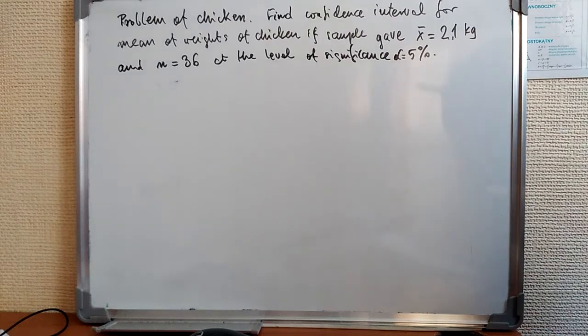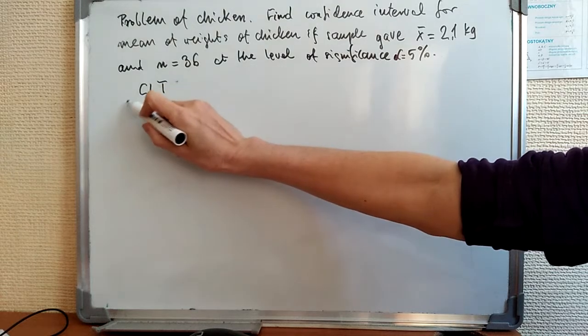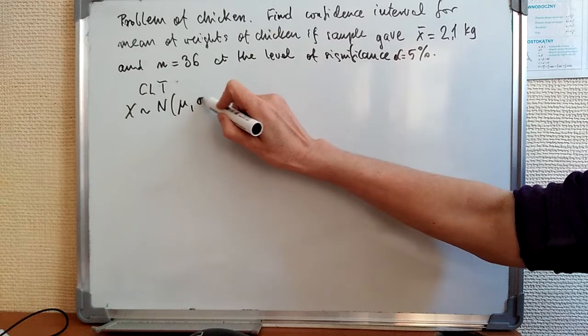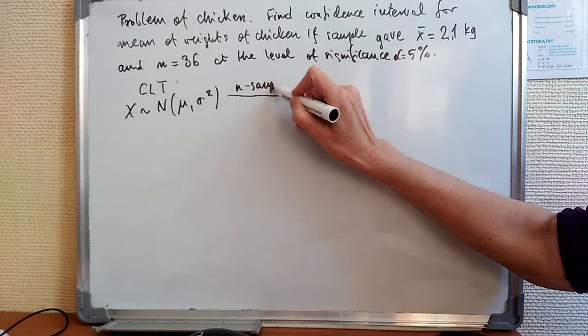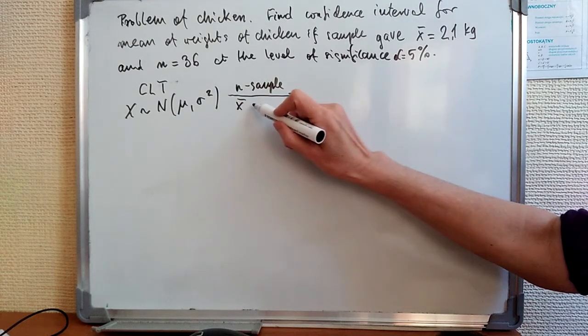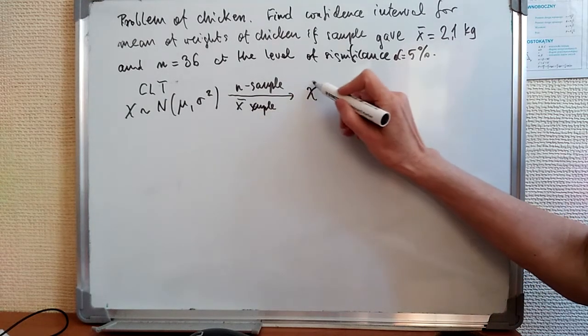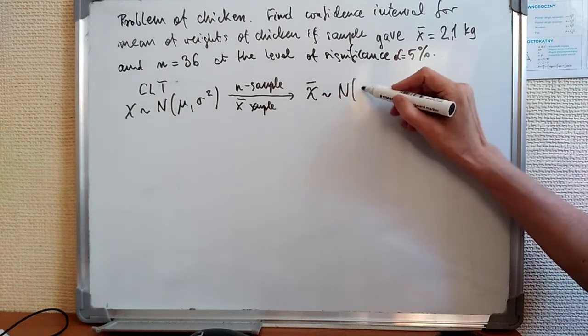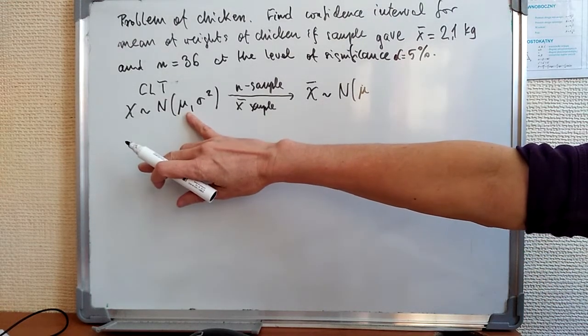In order to solve this mystery, let's recall the central limit theorem. What do we have? If some random variable was normal with parameters mu and sigma squared, and then we took a sample, sample of n elements, and we took mean of the sample, the sample mean. Then what's the distribution of the sample mean?